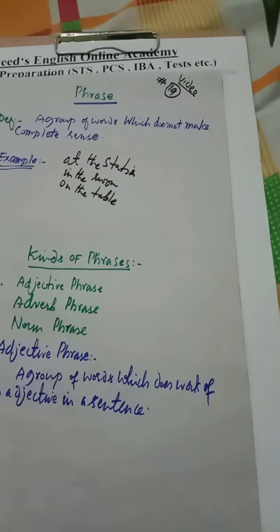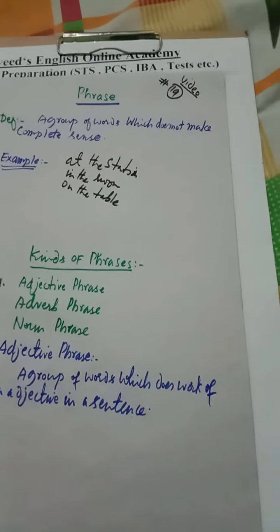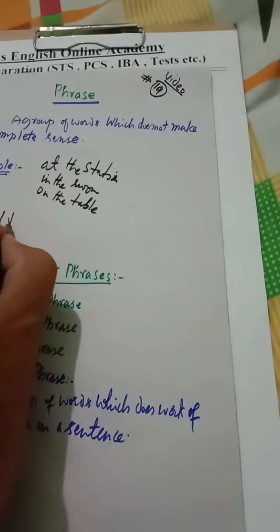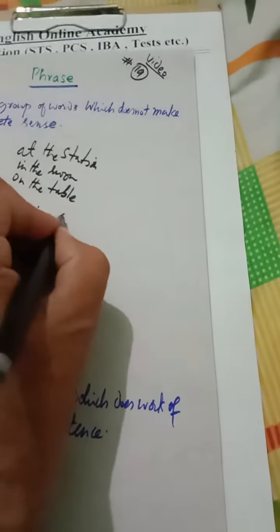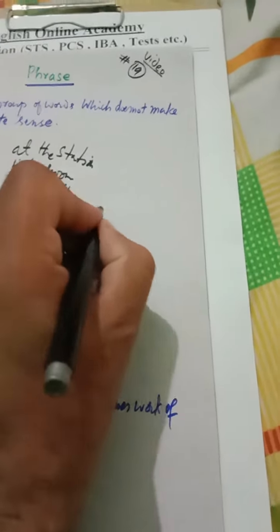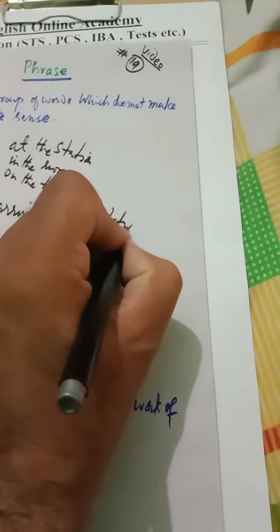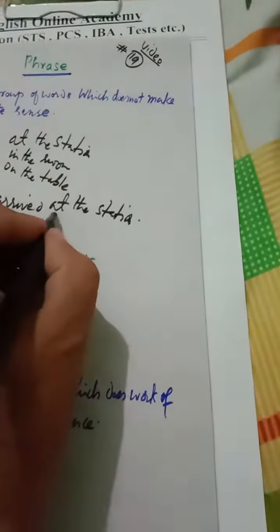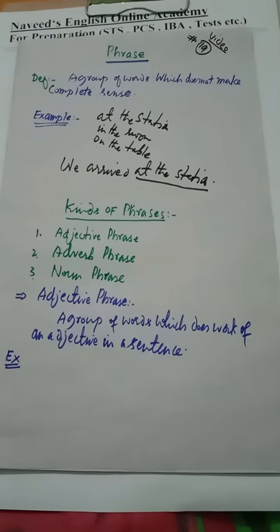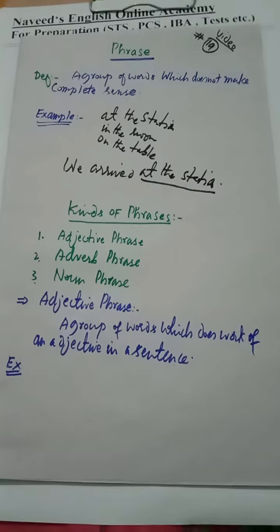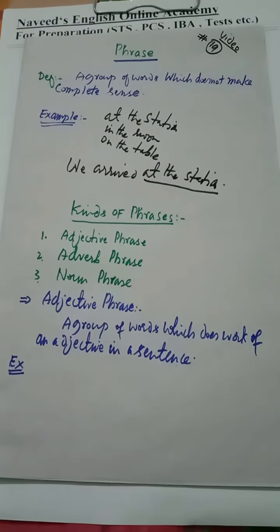Suppose we arrived at the station. Example in a sentence: we arrived at the station. Here, at the station is the phrase. Kinds of phrases: number one adjective phrase, number two adverb phrase, number three noun phrase.